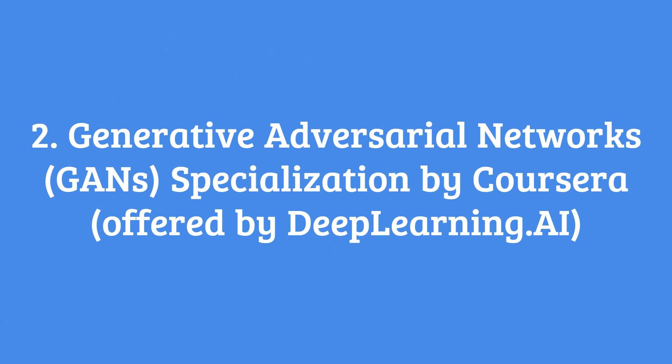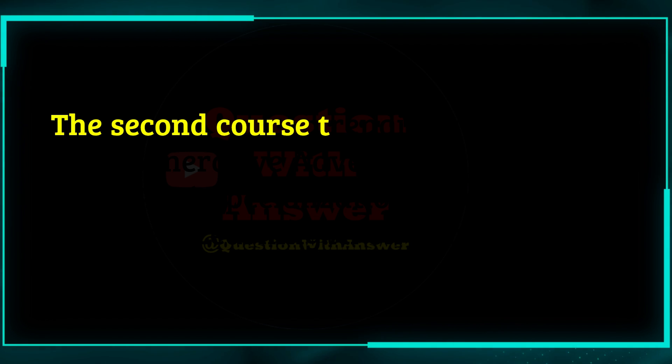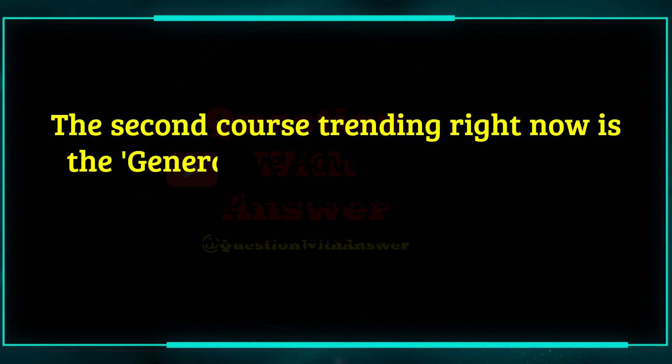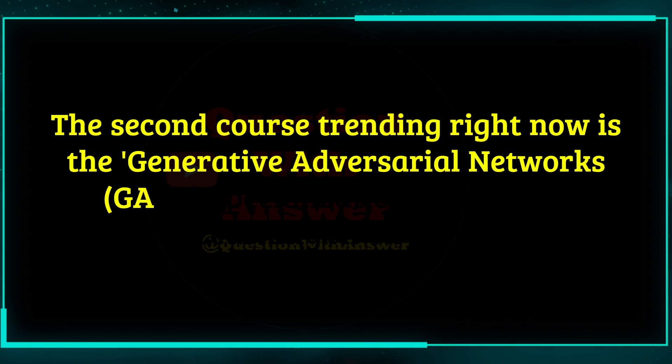Number 2: Generative Adversarial Networks (GANs) Specialization by Coursera, offered by DeepLearning.ai. The second course trending right now is the Generative Adversarial Networks (GANs) Specialization, offered by DeepLearning.ai on Coursera.